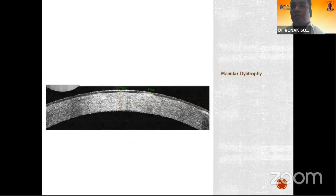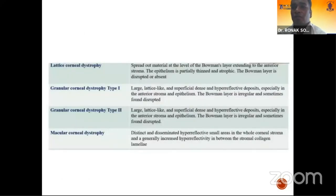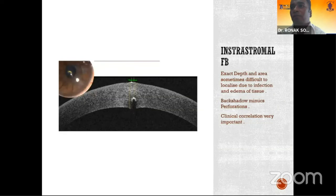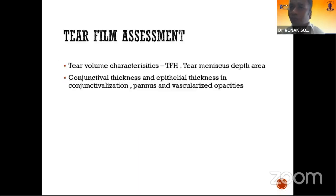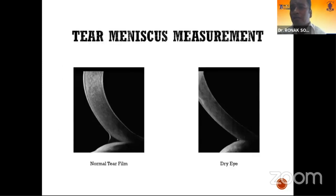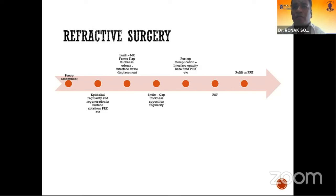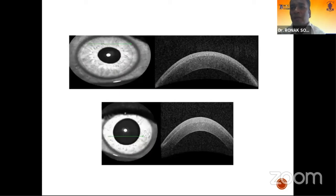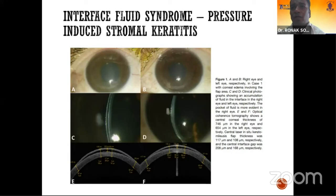For corneal dystrophies, beyond diagnosis, ASOCT shows various levels of involvement, helping determine whether to do PTK or PRK based on depth of involvement. For intrastromal foreign bodies, exact depth and area can be seen — a back shadow on OCT may mimic a perforation, but this is an artifact. Tear film height can be assessed and is reduced in dry eye cases. In refractive surgery, ASOCT enables epithelial mapping, flap assessment, and SMILE lenticle evaluation. Retreatment decisions can be based on flap depth. Characteristic planar and meniscus LASIK flap patterns are identifiable, and interface fluid syndrome can be detected and monitored during treatment.